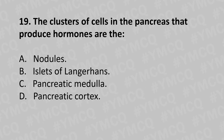Moving to our nineteenth question. The cluster of cells in the pancreas that produce hormones are the: Option A: nodules. Option B: Islets of Langerhans. Option C: pancreatic medulla. Option D: pancreatic cortex. And the answer is Option B: Islets of Langerhans.